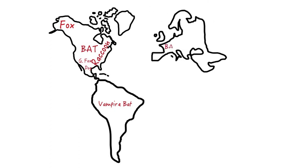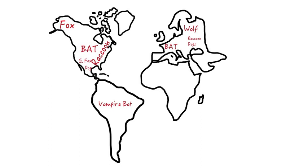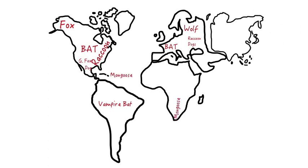Insectivorous bats are important vectors of rabies throughout Europe. In Western Europe, red fox rabies was eliminated by oral vaccination. In Eastern Europe, rabies occurs in raccoon dogs, and in Northern Europe in wolves. Wildlife serving as reservoirs in other parts of the world include the mongoose in the Caribbean, southern Africa, and parts of Asia; jackals in Africa; marmosets in Brazil; and ferret badgers in China.